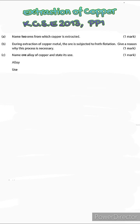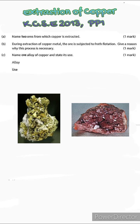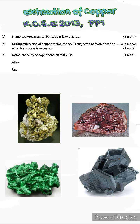Our first question is from 2013, paper 1: Name two ores from which copper is extracted. Copper has the following ores: copper pyrites, cuprite, chalcolite, and malachite. Copper pyrites are the main ores from which copper is extracted. Since they didn't specify the main ores, any of these ores is correct.